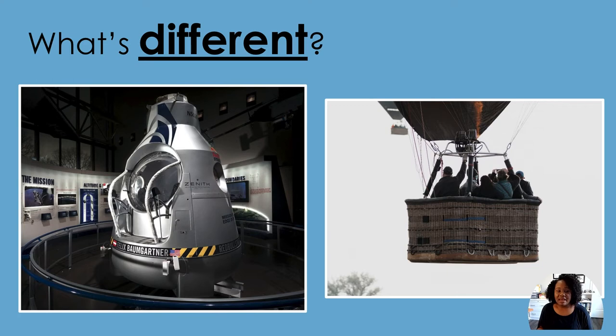I notice that the Red Bull Stratos gondola is enclosed or closed off on all sides, but the hot air balloon gondola is open at the top. I wonder if the Stratos gondola is enclosed because it goes way up into the stratosphere.